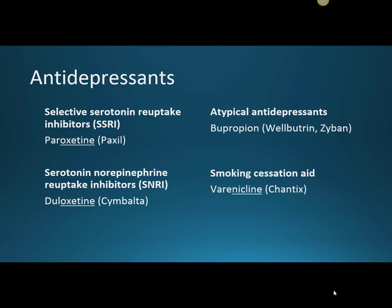The second drug is a serotonin norepinephrine reuptake inhibitor, or SNRI. The example we'll use today is duloxetine, or Cymbalta. Even though duloxetine has the '-oxetine' stem like paroxetine and fluoxetine, remember that this is an SNRI and not an SSRI. As an SNRI, it inhibits the breakdown of both serotonin and norepinephrine in the brain.